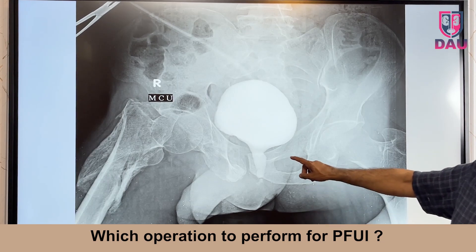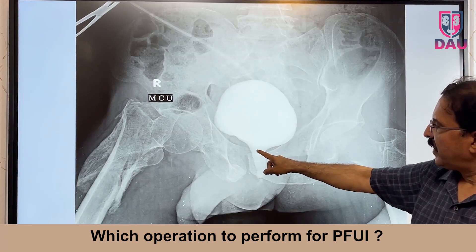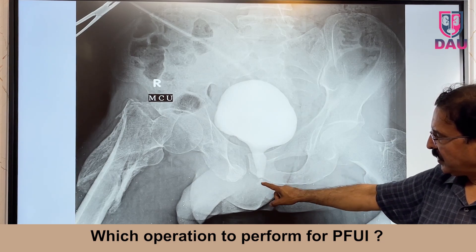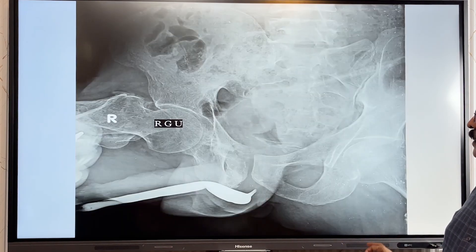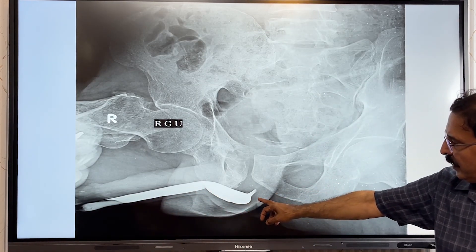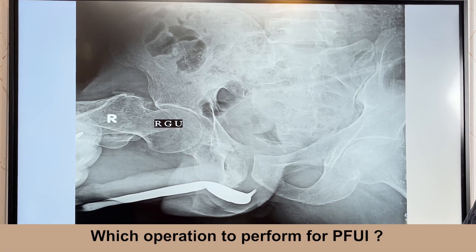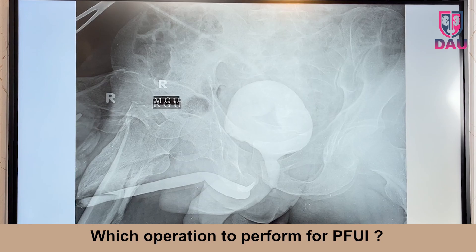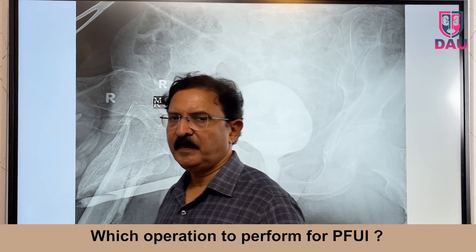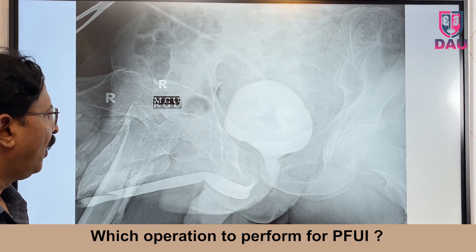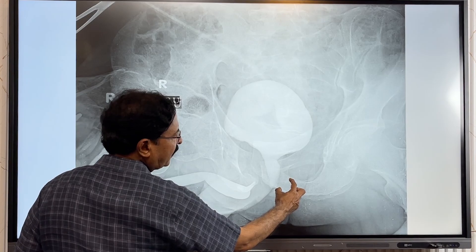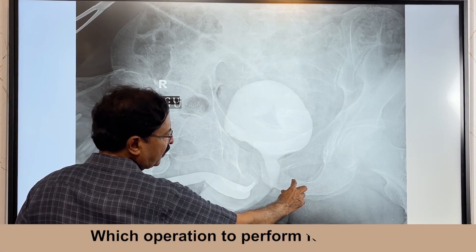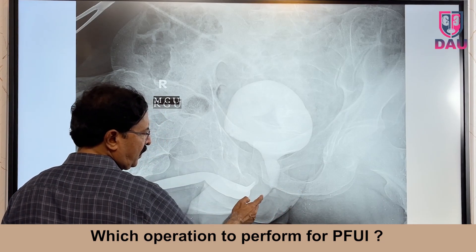On the MCU film, the bladder shows no reflux, the bladder neck is wide, and the prostatic urethra has good caliber and moderate length — the defect is clearly below the verumontanum. The retrograde film shows a good bulb with only a small part involved in the stricture process. When you superimpose the RGU over the MCU film, the breadth of the ischial ramus bone is 2 centimeters, and by comparison the distraction defect is also approximately 2 centimeters.